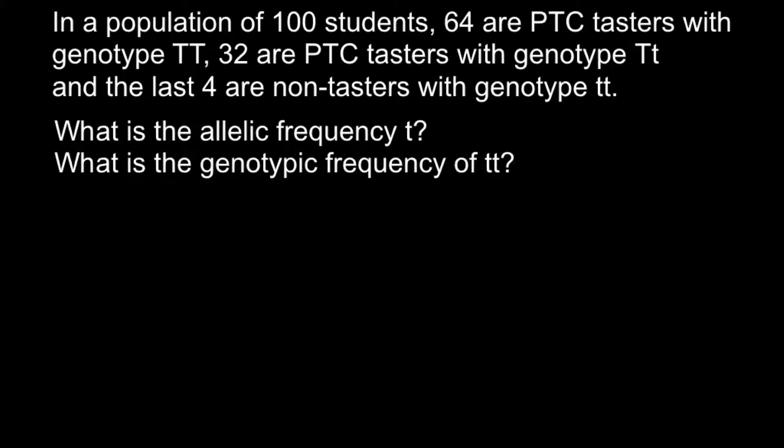Let's start with the first question — what is the allelic frequency? Let me write down all the genotypes that we have here. We have 64 people with genotype capital T, capital T — so 64 homozygous dominant testers. We also have 32 heterozygous people, and we have 4 people that belong to the small t, small t genotype.